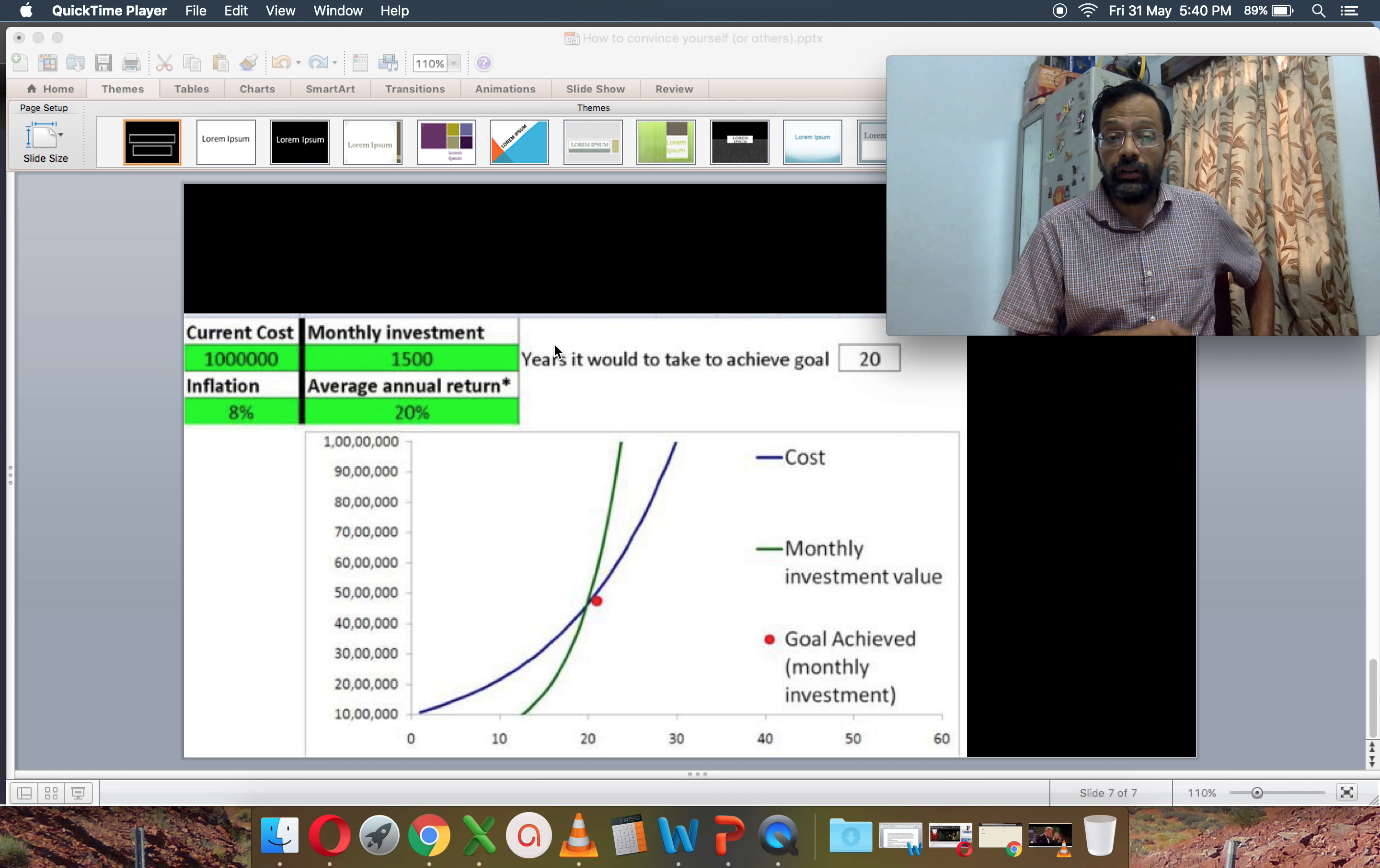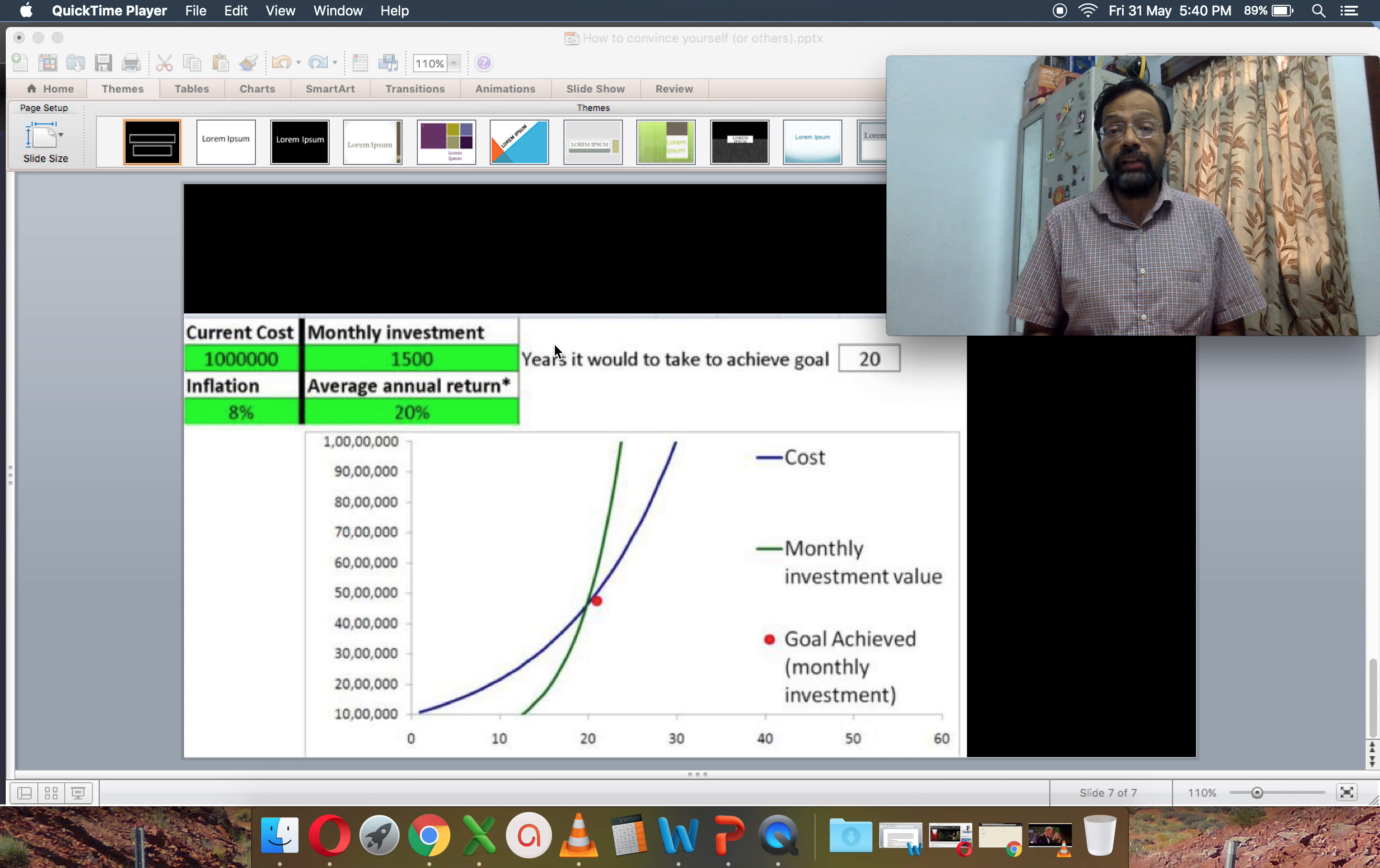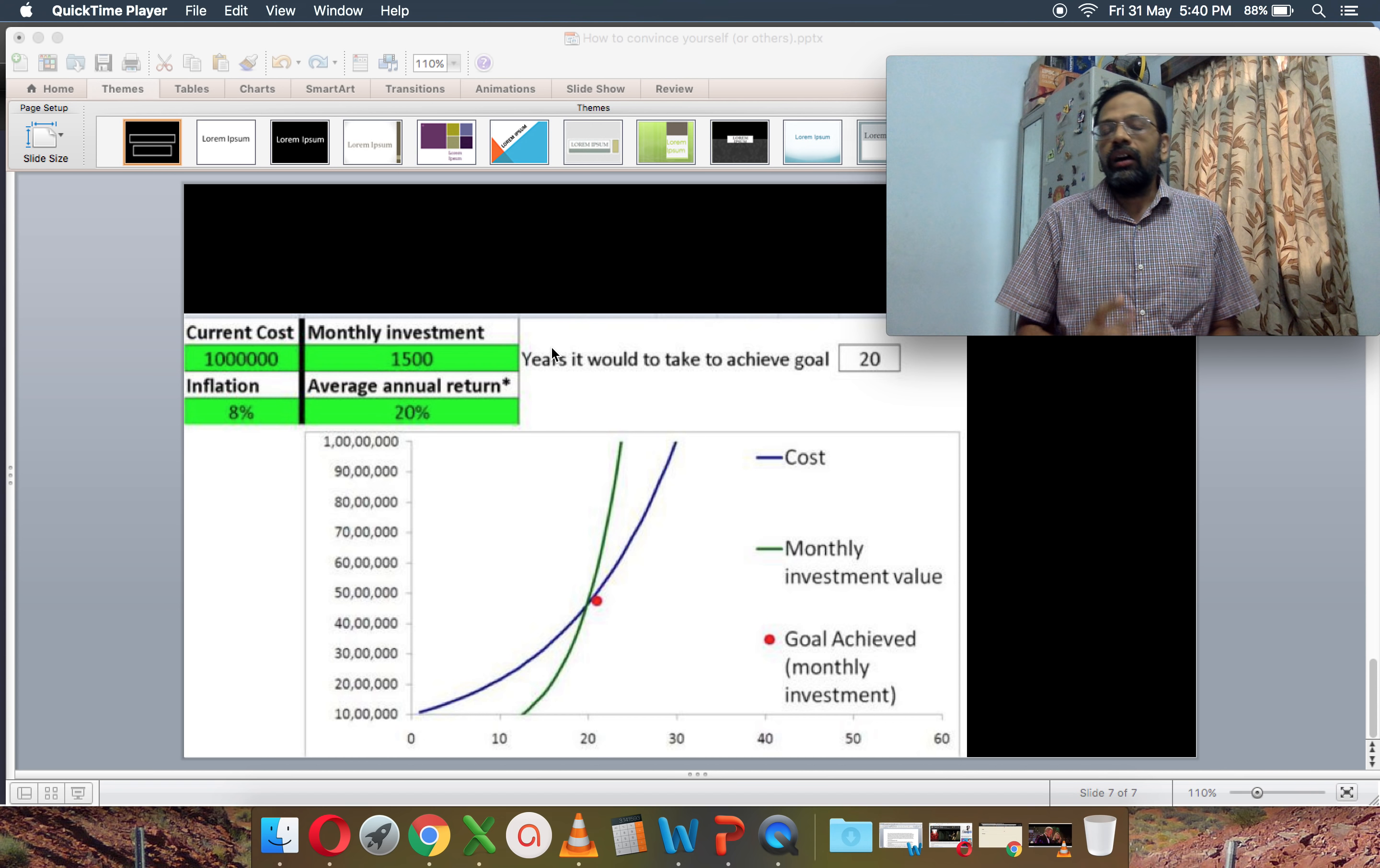So this would be the last slide. Current cost is 10 lakhs. Inflation is 8%. Monthly investment is 1,500. So if the person says, I can invest only 1,500 rupees, then what should be the return for me to achieve the goal in about 19, 20 years? Then the annualized return is 20%. It is simply not possible to have an annualized return for 20 years to be 20%. It is simply not possible. Taking on too much risk does not mean too much return. Please recognize.